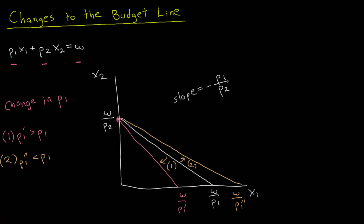Intuitively, when the price of good one increases, the budget line rotates clockwise because good one is more expensive, so the consumer's purchasing power is not as great. There is a reduction in their budget set — the budget set being the budget line and everything below and to the left, i.e., everything affordable to the consumer. Bundles that were previously affordable are no longer affordable, so the budget set shrinks. Conversely, when the price of good one decreases, the budget set expands as the budget line rotates counterclockwise, and new bundles become affordable because good one is less expensive.